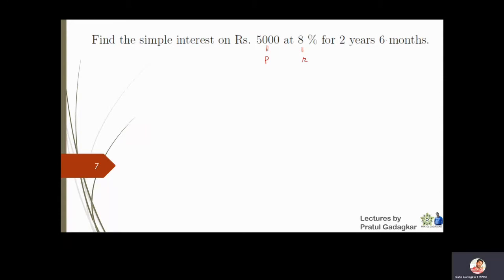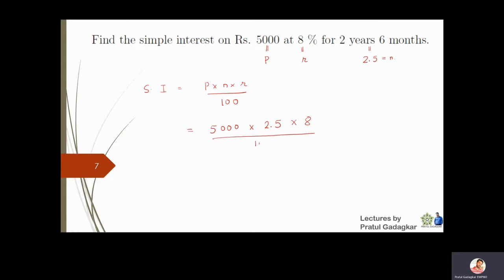Two years and six months means the number of years is 2.5 years. So the formula for simple interest is SI = P × n × r / 100, which is equal to 5000 × 2.5 × 8 / 100.